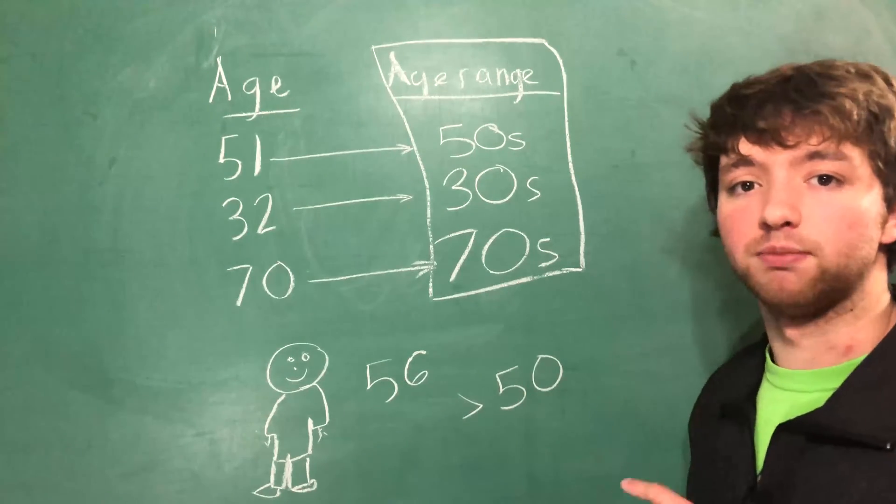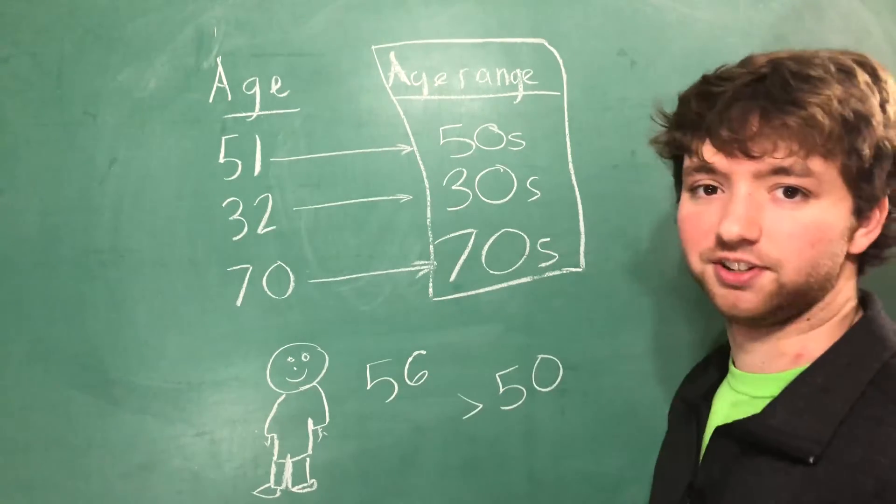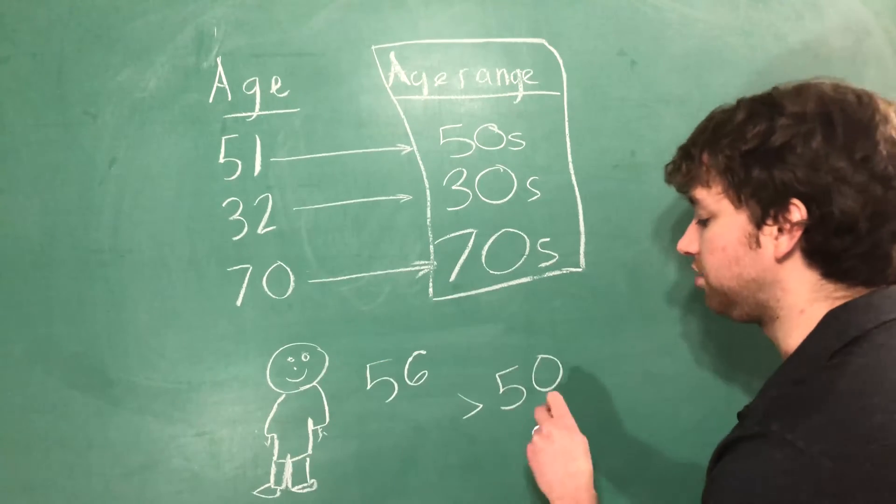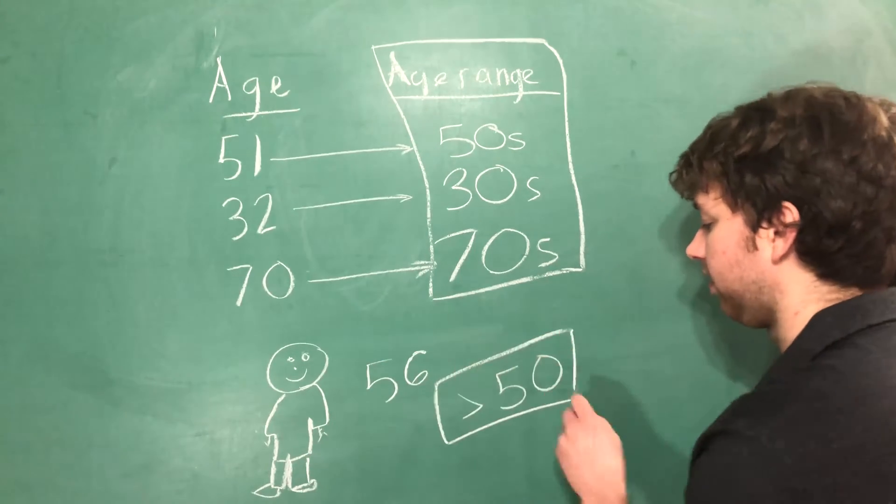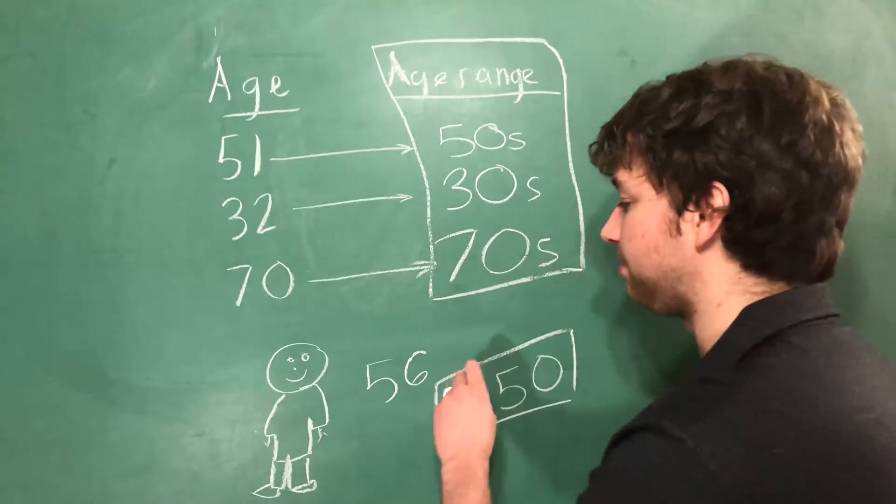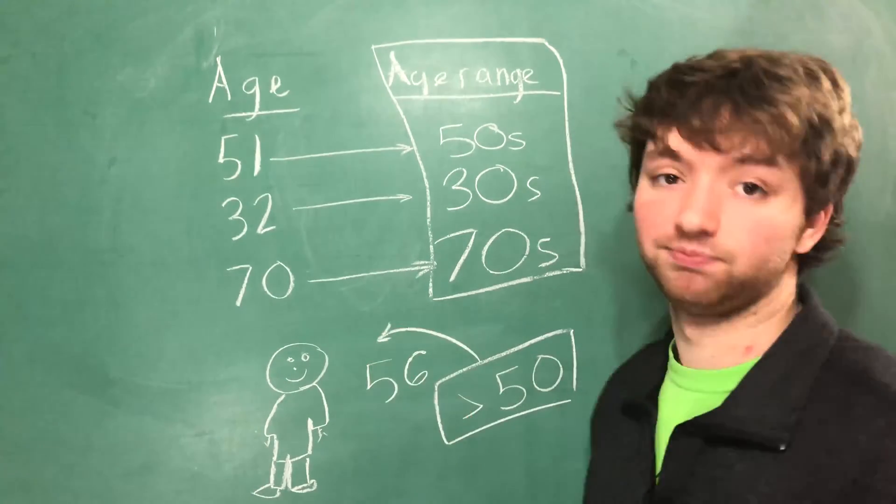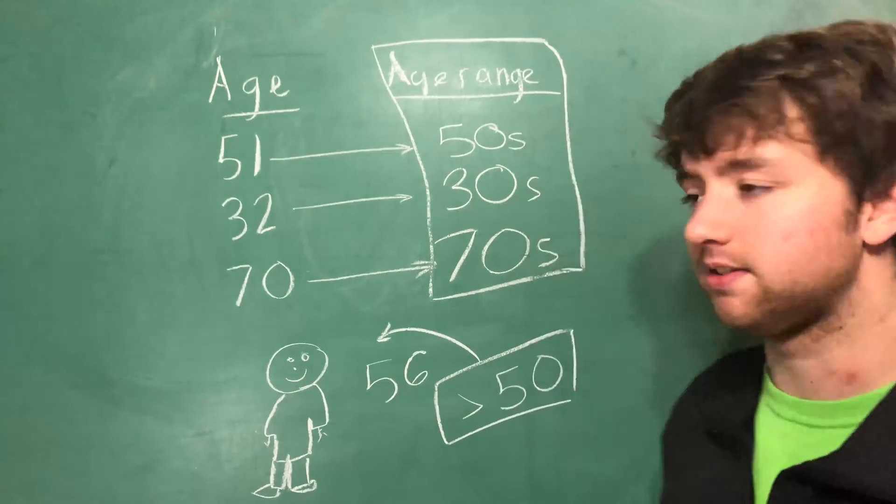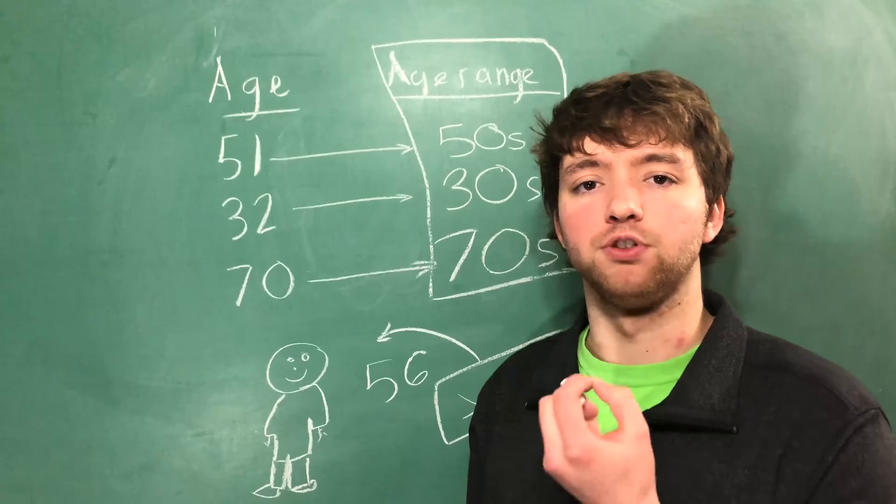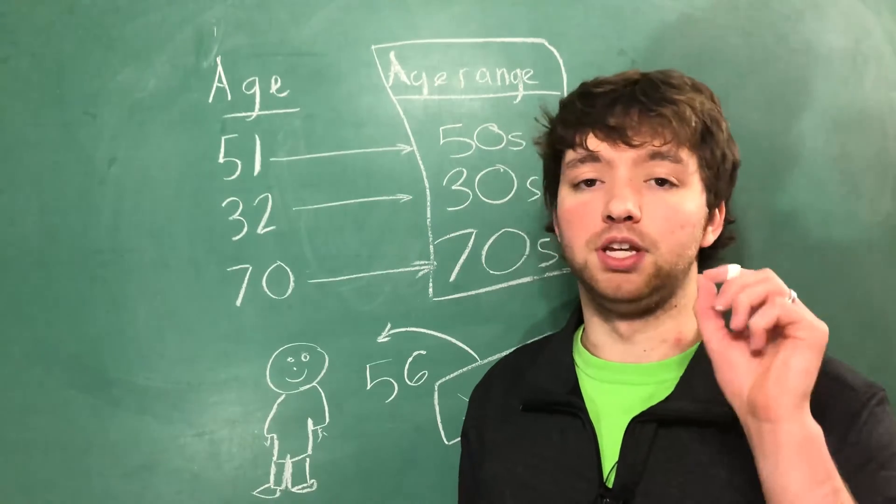We're starting to get information by losing information. We binned this guy in our head into a category. Once we have categories we can predict what's going to happen for individuals. So if you can take your data, group it, and then see the end result for those groups, that's going to be more effective.